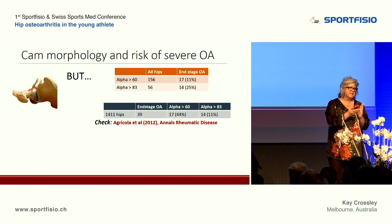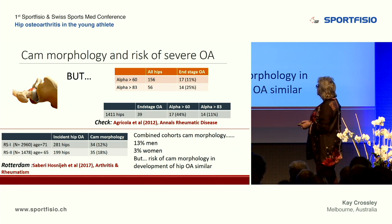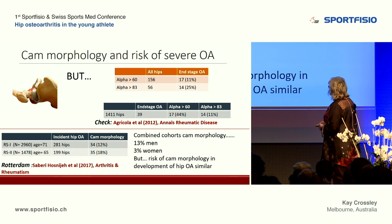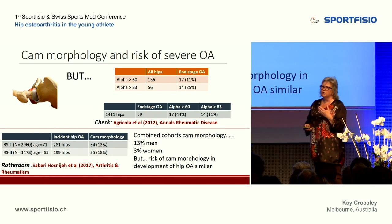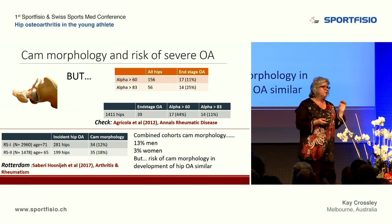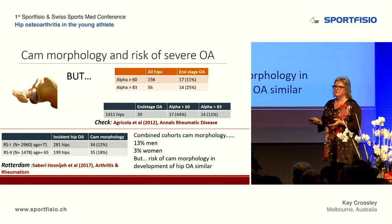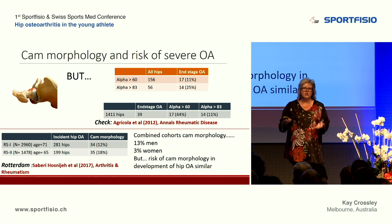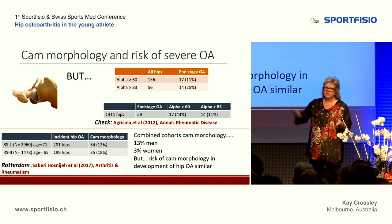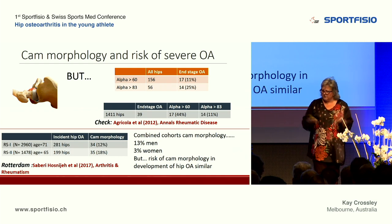About 44% of those end-stage OA cases had an alpha angle greater than 60 degrees, so there is a relationship but it's not a one-way street — not everyone with CAM morphology goes on to develop end-stage OA. In the Rotterdam study, CAM morphology was present in about 12–18% of incident hip OA cases. Interestingly, while CAM morphology is more prevalent in men than women, the risk of developing OA is the same in both groups if you have it.